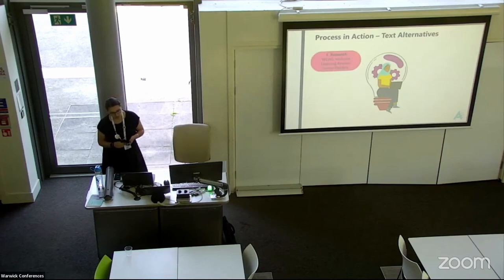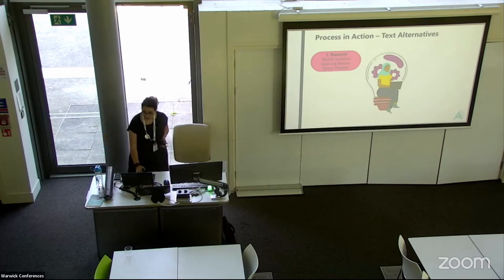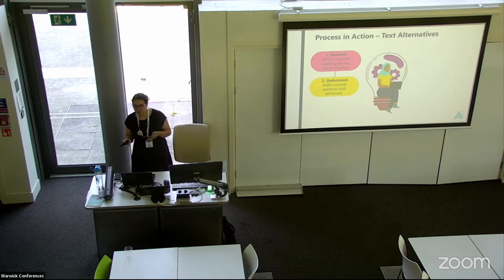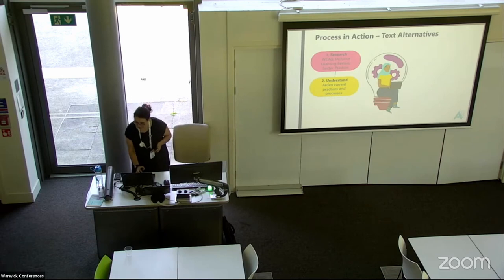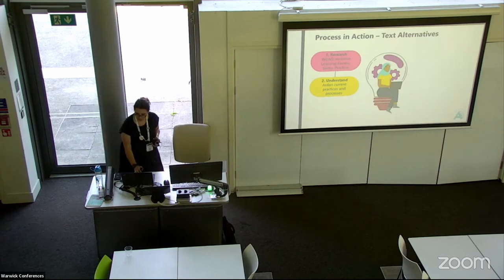Number one in our process is research — researching best practice, regulatory and legal compliance on alternative text and image description. Number two is understand — understanding our current processes, holding up that mirror and saying, do we actually do this, or do we do it for this but not that? Things to consider include the type of platform you're using, how you're adding that into practice, and who is responsible for doing that. And if you're getting it right in one area, how do you get it right in others?